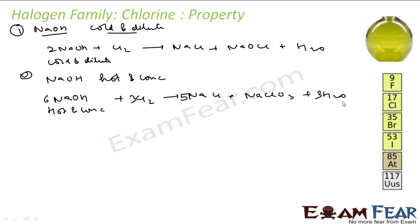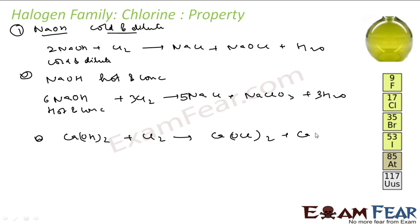With dry slaked lime, Ca(OH)2, chlorine reacts to give bleaching powder — CaOCl2 — along with water as a by-product. We will talk about bleaching powder in more detail. Chlorine has also been seen in substitution and addition reactions in hydrocarbons.